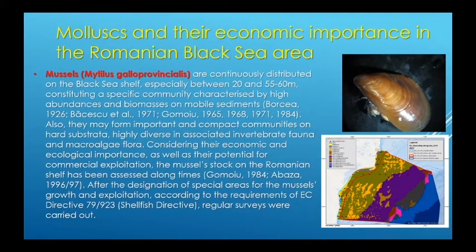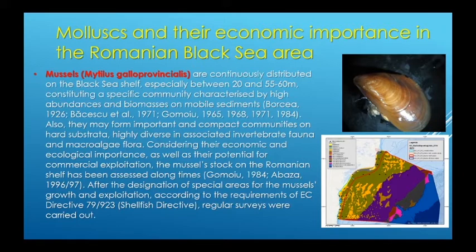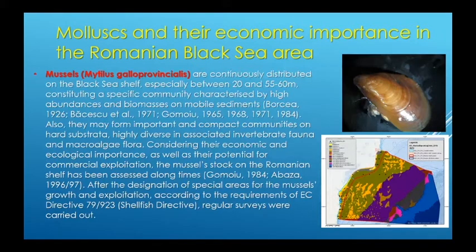Mussels are continuously distributed on the Black Sea Shelf, especially between 20 and 55–60 metres, constituting a specific community characterized by high abundances and biomasses on mobile sediments. They may also form important and compact communities on hard substrata, highly diverse in associated invertebrate fauna and macroalgae flora. Considering their economic and ecological importance and their potential for commercial exploitation, the mussel stock of the Romanian shelf has been assessed, and following the designation of special areas for mussel growth and exploitation according to shellfish directive requirements, regular surveys were carried out.